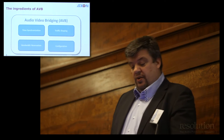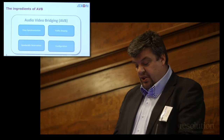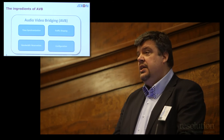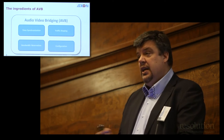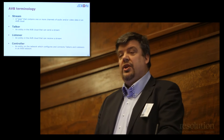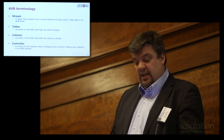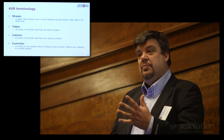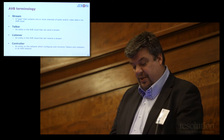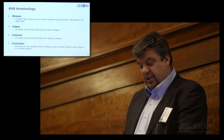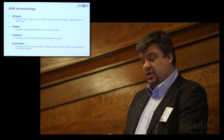So what are the ingredients of AVB? There are four important topics: time synchronization, bandwidth reservation, traffic shaping, and configuration. Before we go into detail, a little terminology. In AVB, we talk about streams. A source is called a talker — the audio people were first, as you can see. There is a listener, which is the destination that receives a stream. And there is also a controller, which works with the talkers and listeners to manage the network.